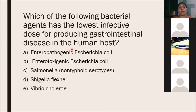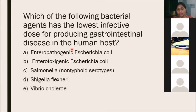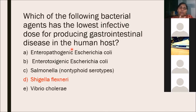Which of the following bacterial agents has the lowest infective dose for producing GI disease in the human host? Options: EPEC, non-typhoidal Salmonella, Shigella flexneri, and Vibrio cholerae. The answer is Shigella flexneri — its infective dose is as low as 100 organisms. For Salmonella, Vibrio, and some E. coli strains, the infective dose is 10³ to 10⁶. Shigella is particularly potent because it produces a strong enterotoxin and exotoxin, is associated with bacteremia, and causes gut distortion before spreading systemically.